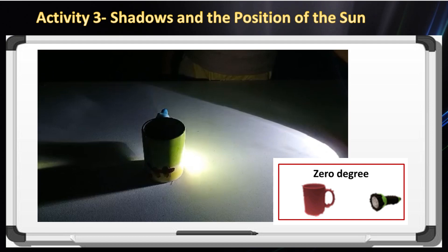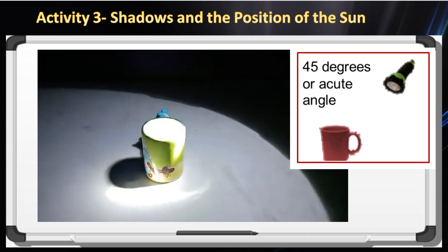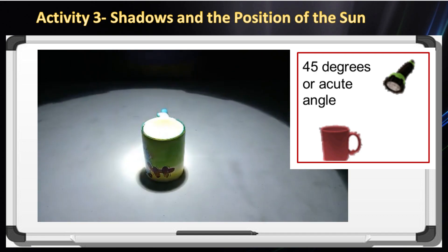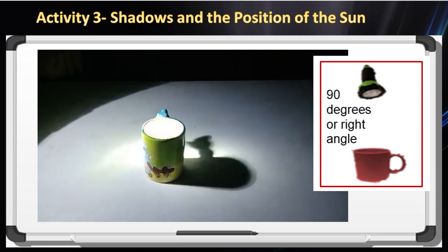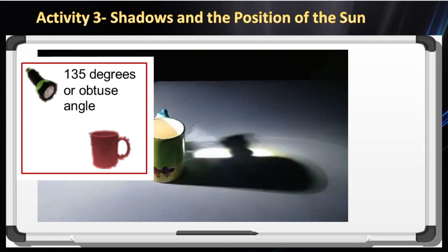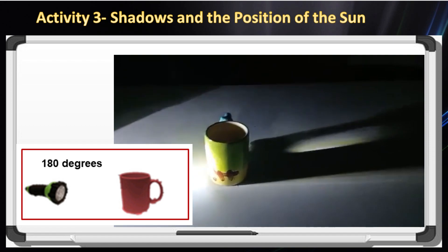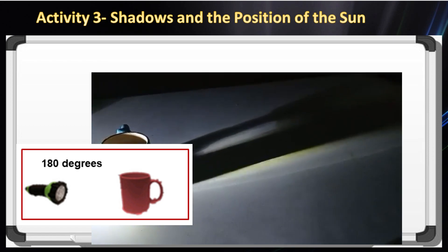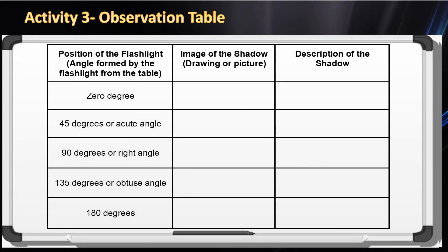At sunrise, position the flashlight at 0 degrees. At around 10 o'clock in the morning, use a 45-degree acute angle. At 90 degrees or right angle — 12 o'clock noon. At 135 degrees or obtuse angle, representing around 2 p.m. During sunset, position it at 180 degrees. Observe the shadow formed at each position.